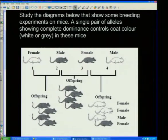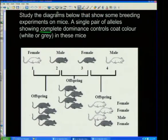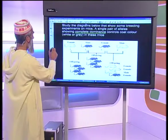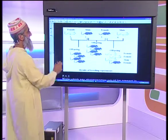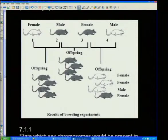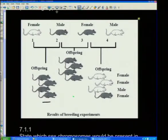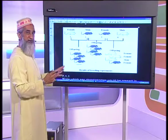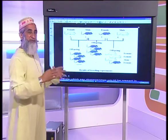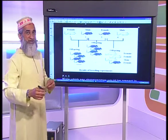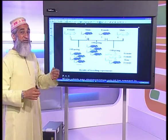This diagram shows breeding experiments on mice with a single pair of alleles showing complete dominance — that's the first clue. Complete dominance controls coat color: white or gray. The diagram shows: the first cross produced all gray offspring; the second cross also produced all gray offspring; and the third cross produced some white and some gray offspring.